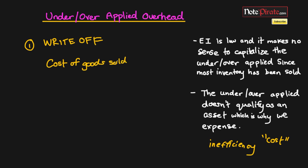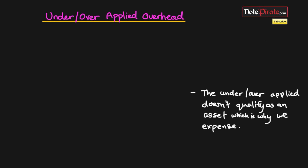By debiting cost of goods sold for $50,000, we bring it back up to what it should be since it was understated. We credit the overhead control account for $50,000 to close it out. This approach attributes all of the under applied amount to cost of goods sold rather than prorating it, which is the next method. Note: if it's over applied you do the opposite — debit overhead control and credit cost of goods sold.